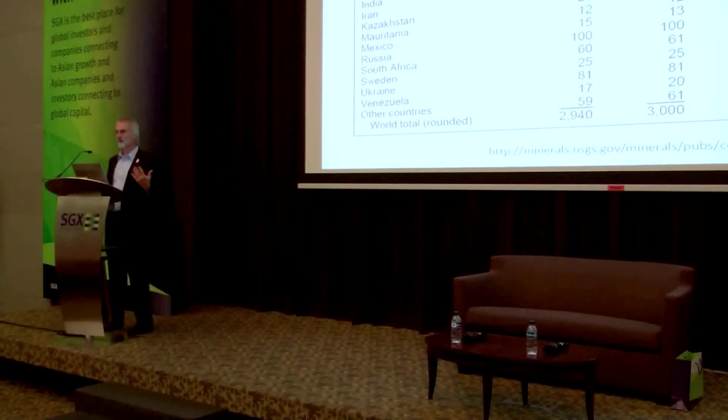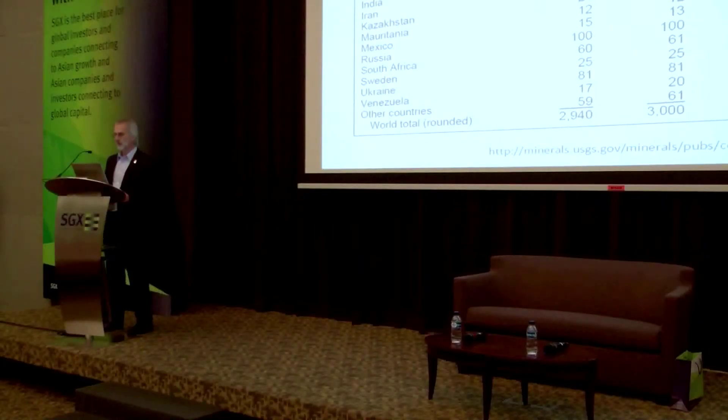There are some production statistics to show where the main production countries are for iron ore. In 2011 and 2012, it's really dominated by China. China is far and away the biggest producer of iron ore on the planet, and when you add up China's production it's still more than the next three biggest countries. Certainly Australia and Brazil are no minions when it comes to iron ore production, and then you've got India behind that. Then you go down to Russia at 100 million tonnes and then a range of other countries that produce smaller amounts.